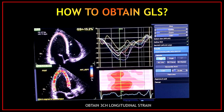By clicking process, you will obtain the three-chamber longitudinal strain. This is the longitudinal strain of just one view. If you want to obtain the global longitudinal strain, you have to do the same process on the rest of the views. To get the global longitudinal strain, you will need to obtain the longitudinal strain of all three different views: the three-chamber view, the two-chamber view, and the four-chamber view.